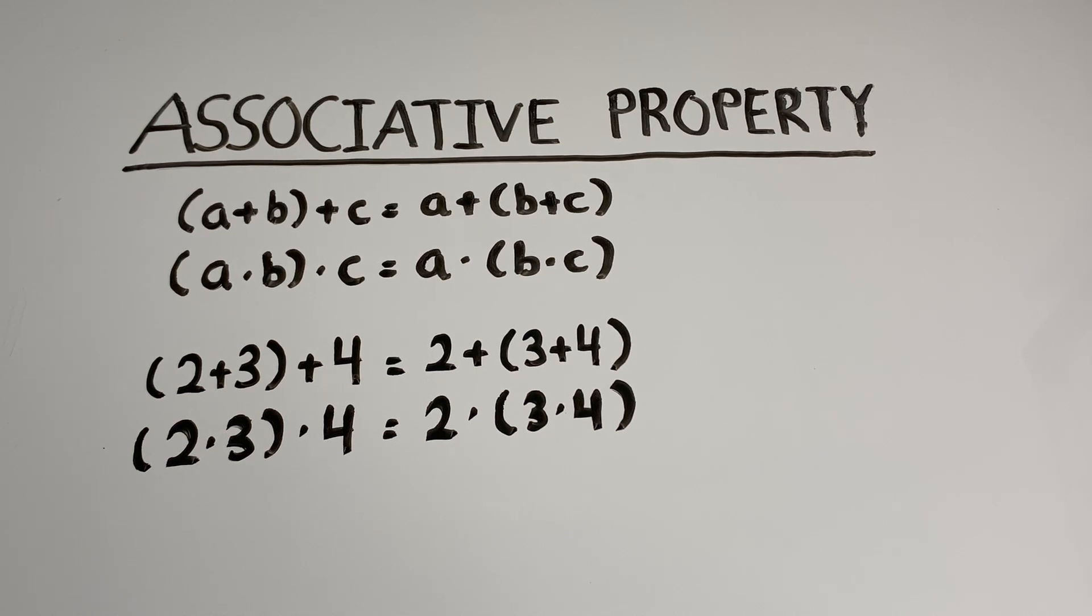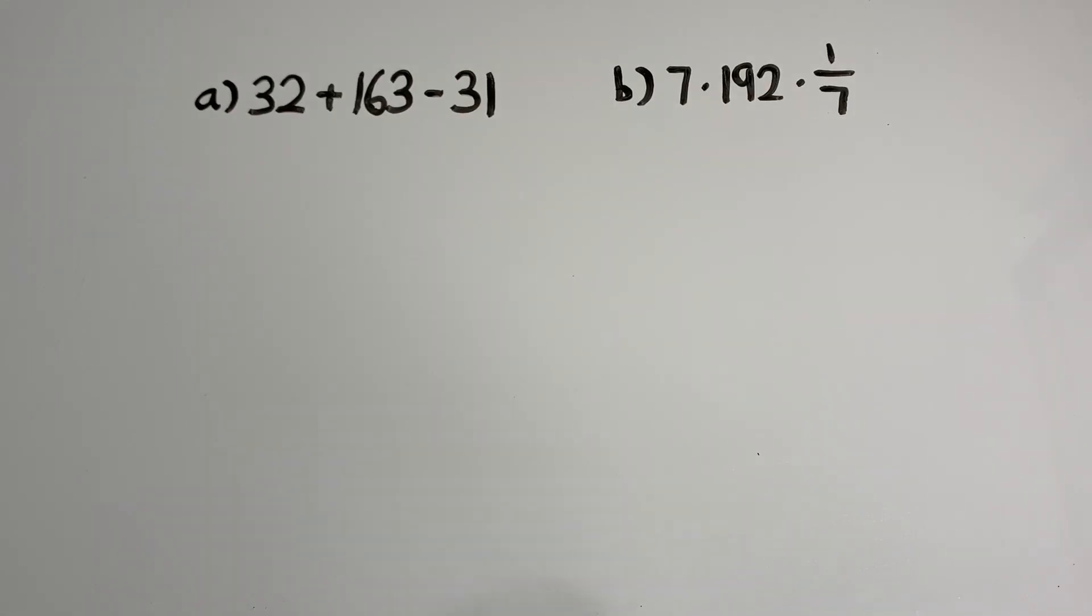So that was the associative property. Now that we've learned both the commutative and associative property, let's see how we can use them.